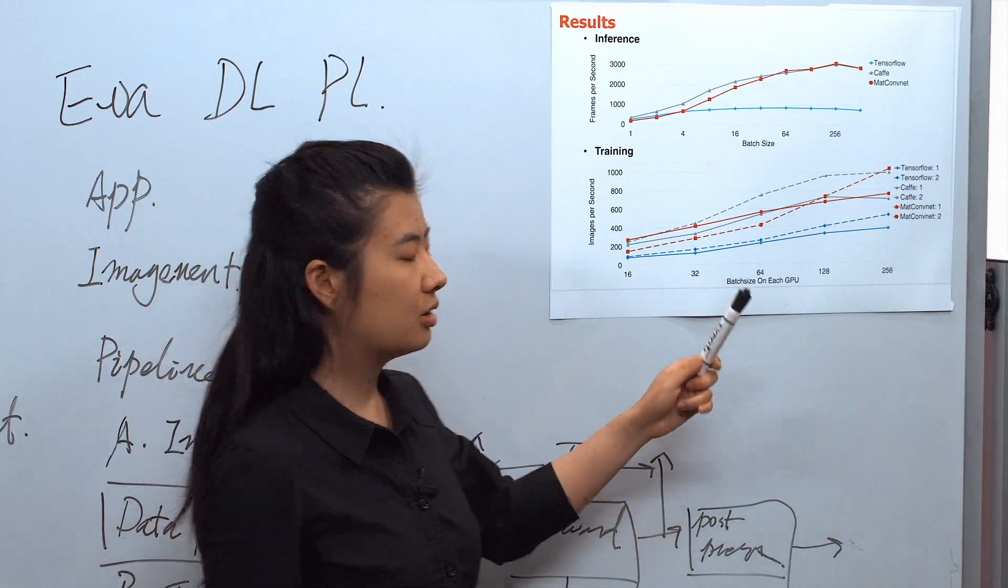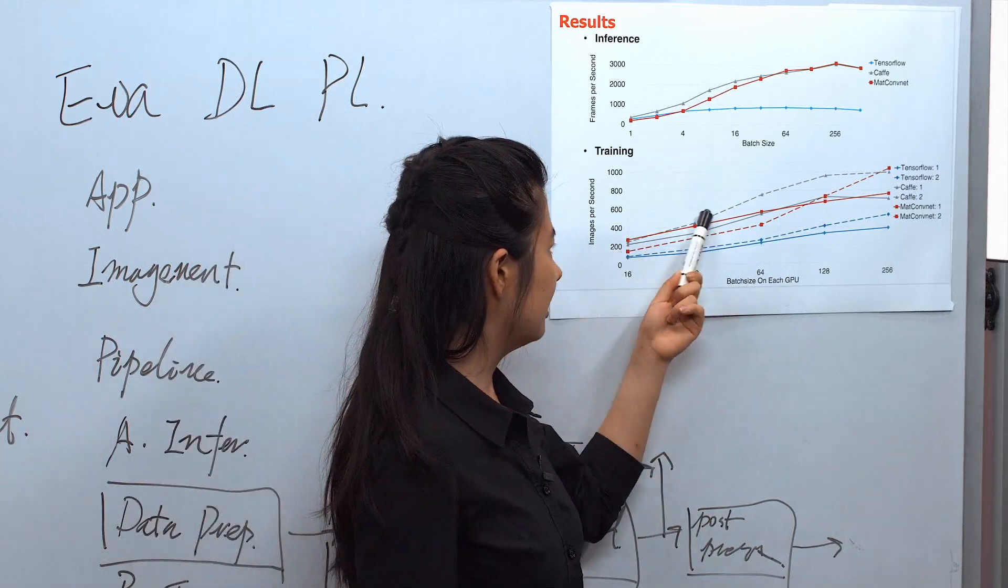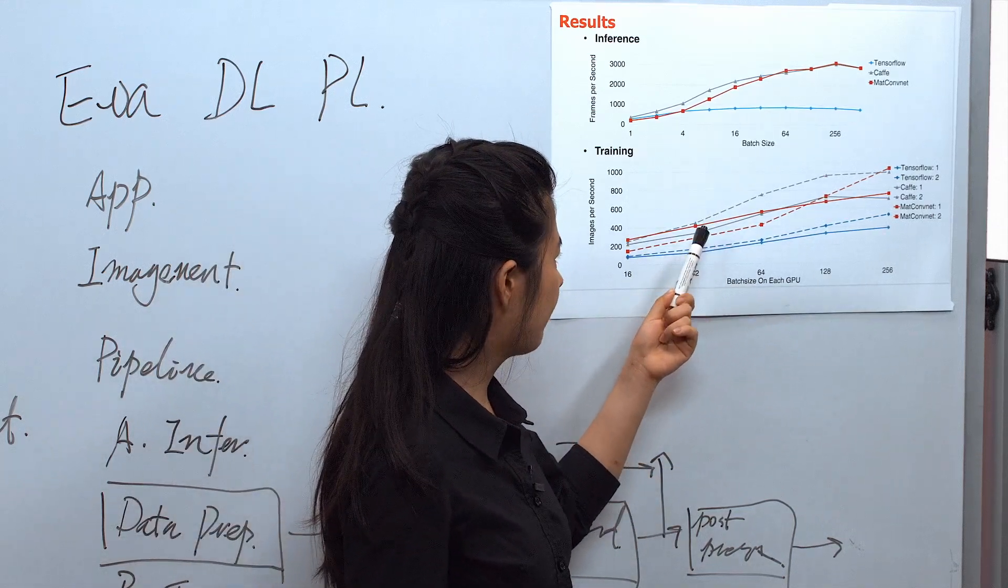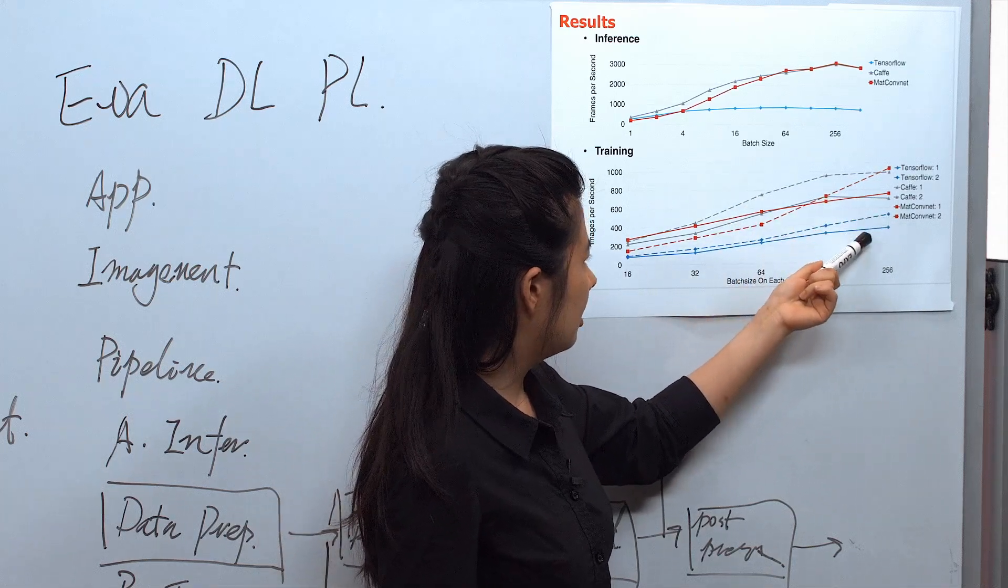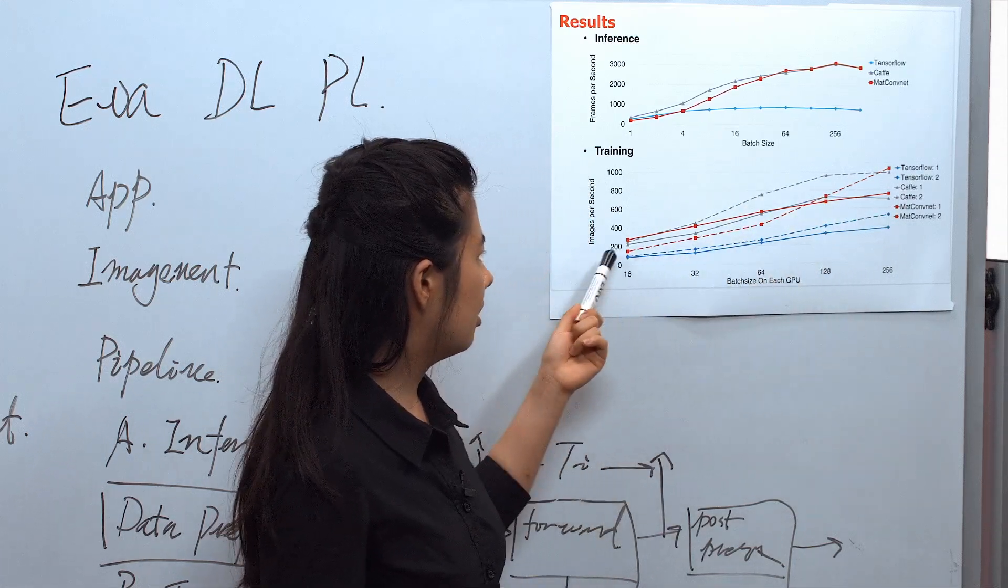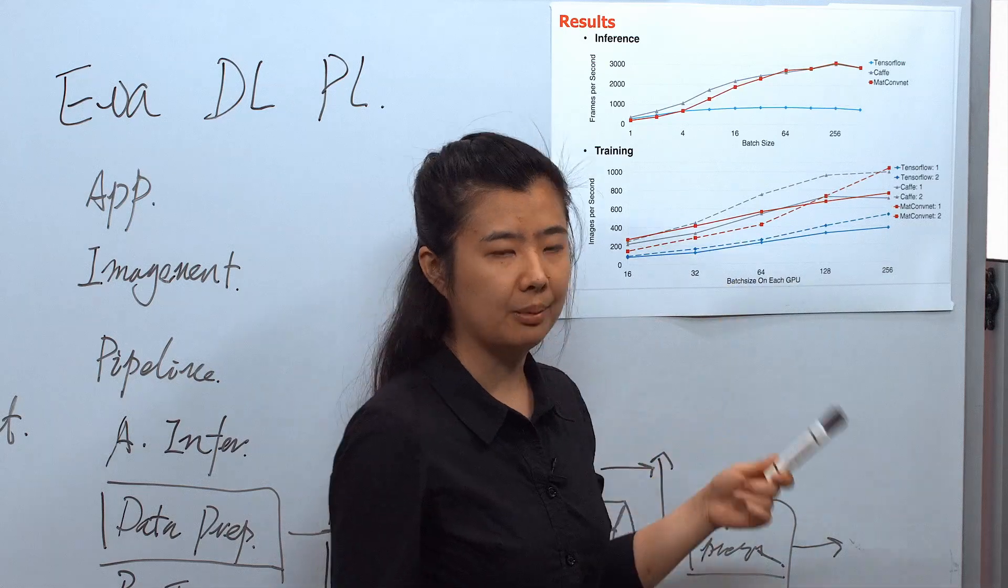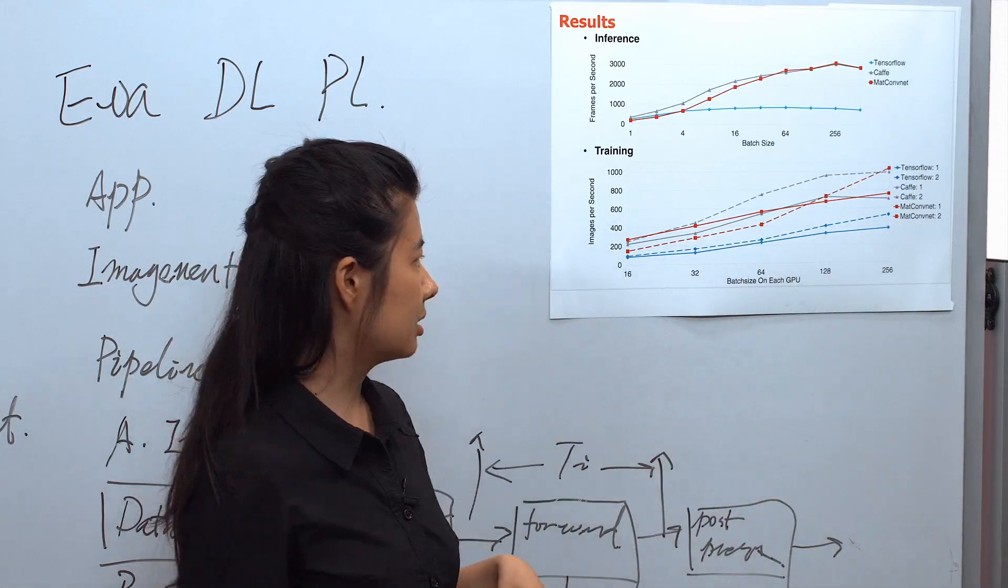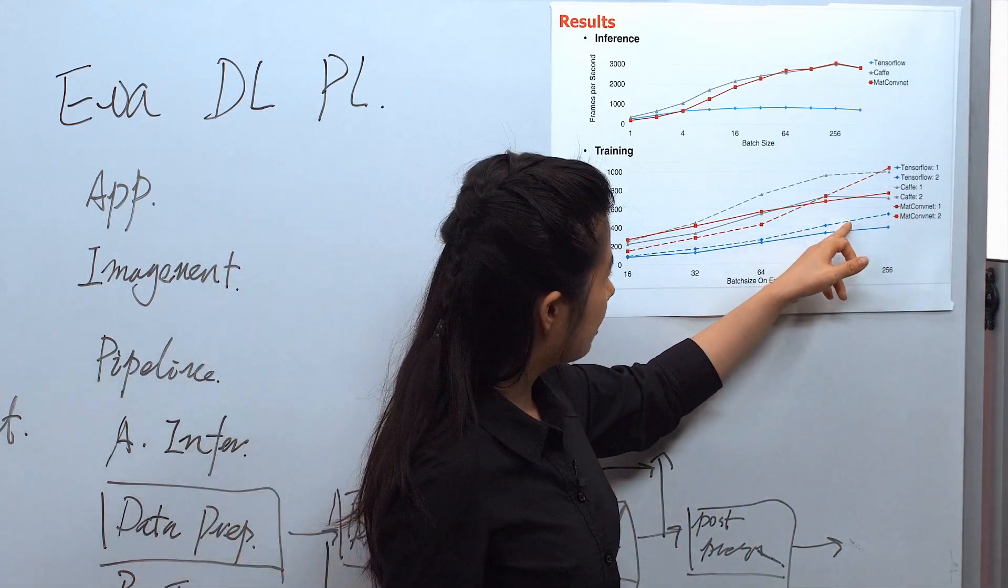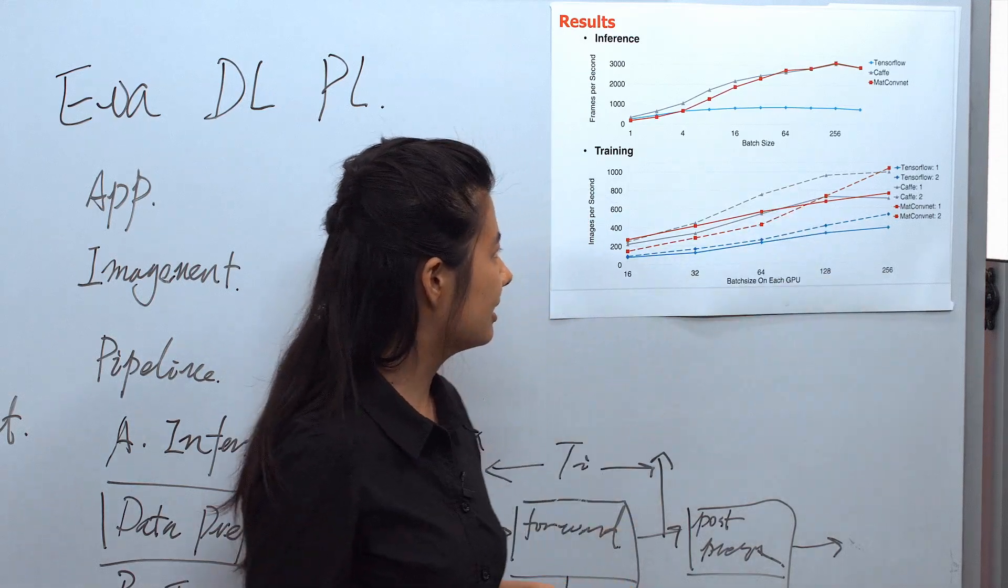Comparing single GPU and two GPUs, the dash lines and solid lines: for Caffe and TensorFlow, it can always get speedup by using two GPUs, so the dash line is always higher than the solid lines.